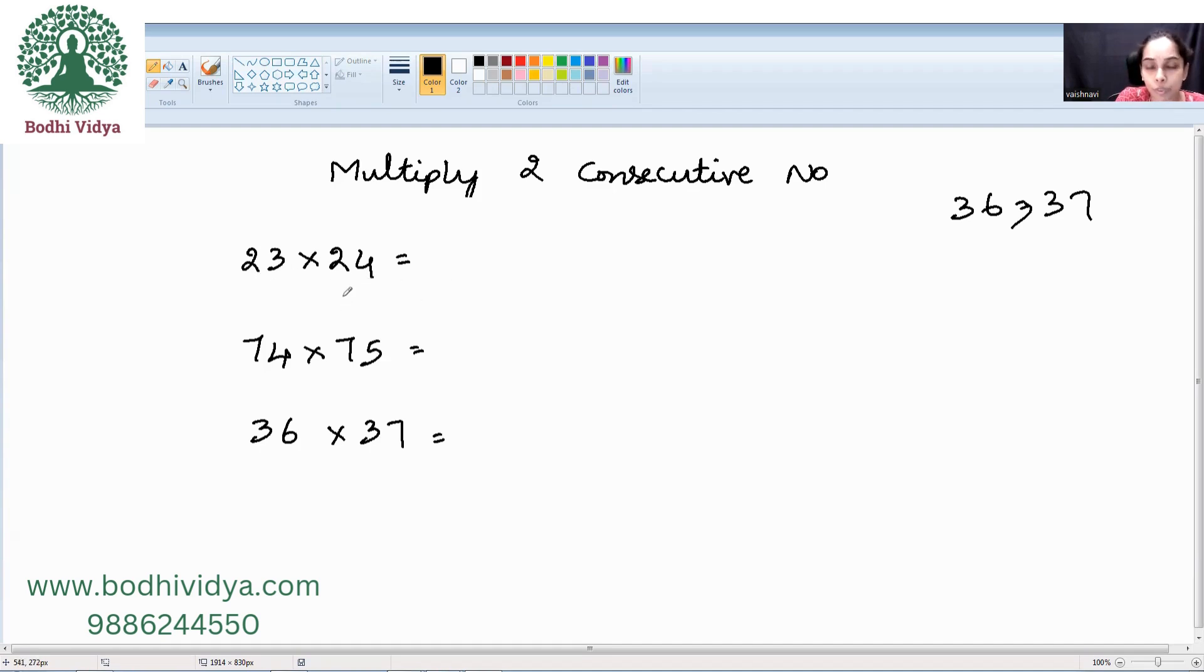So, 23 into 24. I need to take the square of the least number that is nothing but 23 square. In our previous videos, I have taught you how to take the square of any two-digit number. If you are unable to follow the next step, you can go through that video as well. So, how do I do? It is nothing but a plus b whole square. That is what we do. So, it is nothing but this digit square, this digit square, units square, 10 square and multiply unit and 10s with 2.